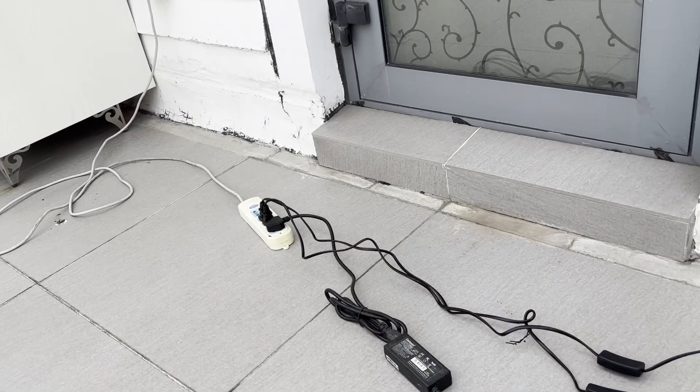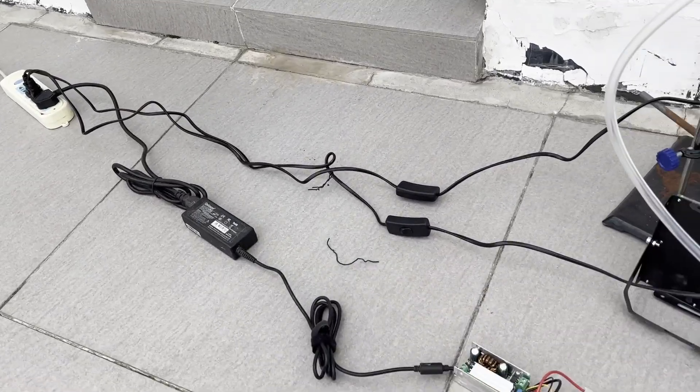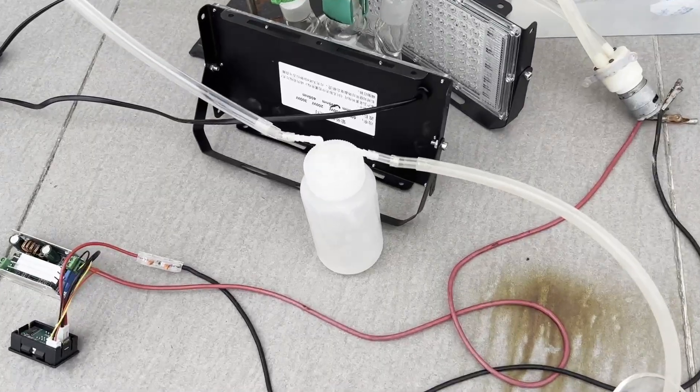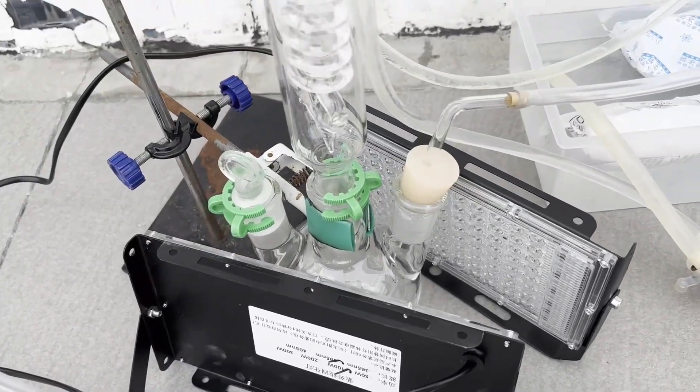We start with the exact same apparatus as last time, as I found out that things work quite well, and the silicone stopper held decently against the triphosgene on carbon tetrachloride.